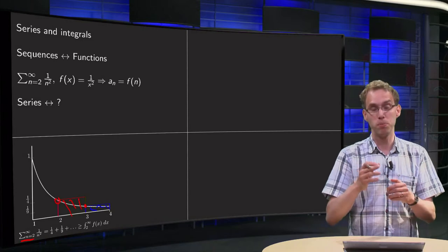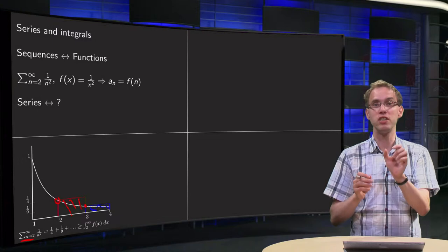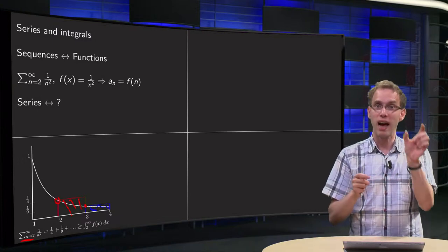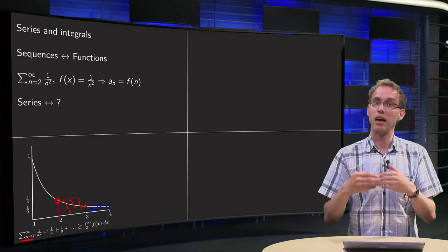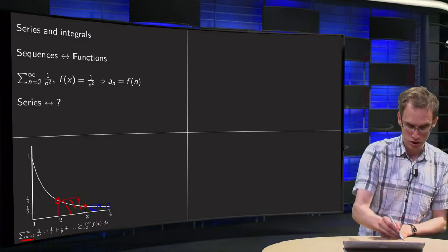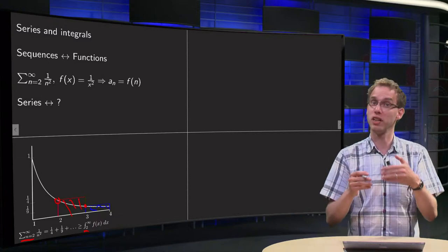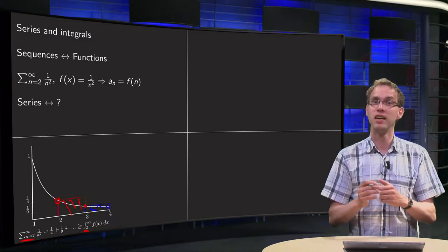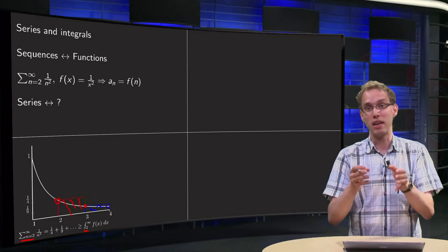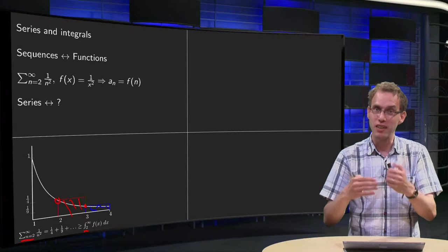And I can continue this procedure for all the terms, and what you see is that all the boxes are above the curve. So, if I add all the boxes, I get an area, and you see this area is bigger than the area below the curve starting at 2. So, here we see that the series has something to do with the integral of the function, which is related to the sequence.